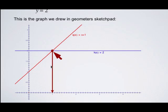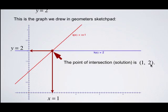you can see that these two lines meet at a point where x is equal to 1 and y is equal to 2. So the coordinates of this point are (1, 2), where x is 1 and y is 2. So this is the solution to our linear system. It's the point of intersection of our two lines when they're graphed.